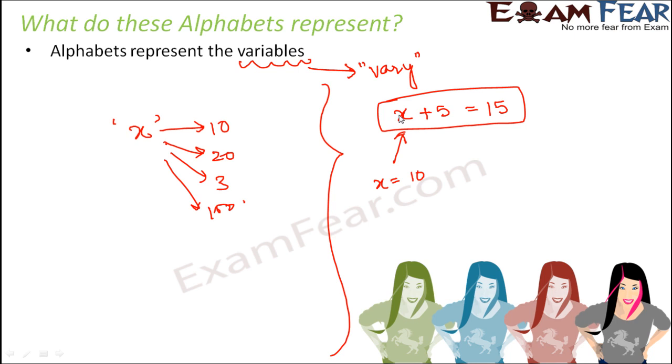Because if x is 10, then 10 plus 5 is 15. So in this case, the value of x is 10, but that doesn't mean that x will be 10 in all the cases.